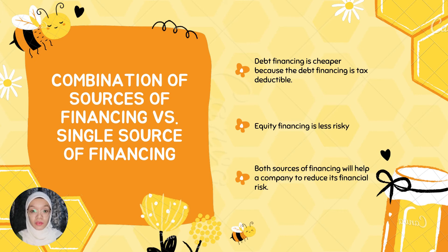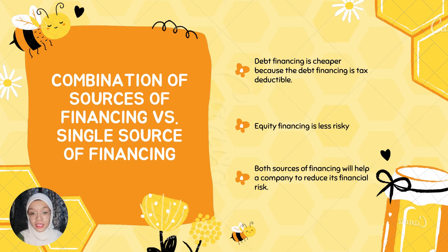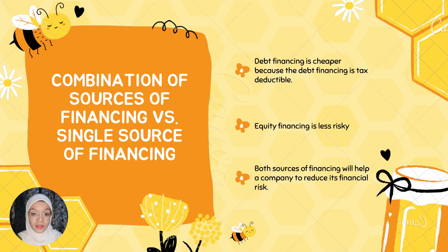Combination of sources of financing versus single source of financing. Each source of financing has its advantages and disadvantages. Debt financing, for example, is cheaper than equity financing because debt financing interest is tax deductible. However, equity financing is less risky compared to debt financing. Therefore, the combination of both sources of financing will help a company reduce its financial risk.